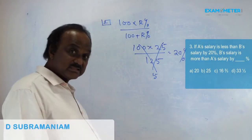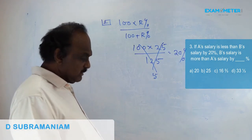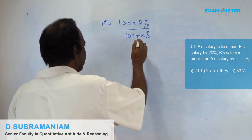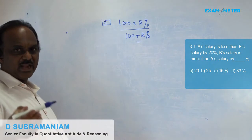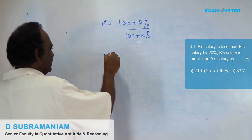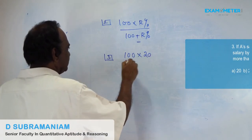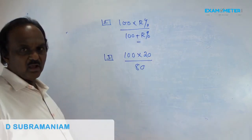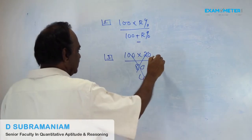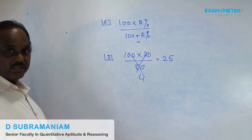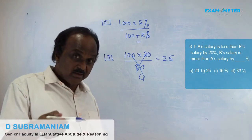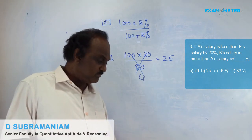If A salary is less than B salary by 20%, B salary is more than A salary by how much percent? If it is 'less than', you should subtract — use 100 minus R% in the denominator. Formula: 100 × 20 / (100 − 20) = 100 × 20 / 80 = 25%. So answer is 25%.